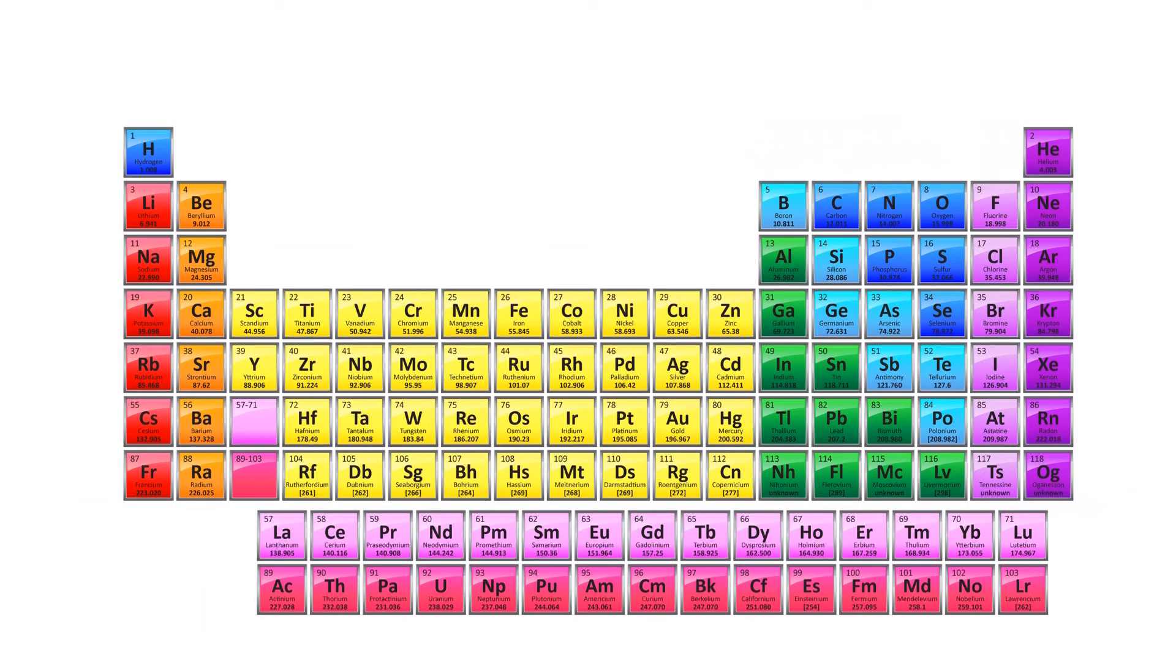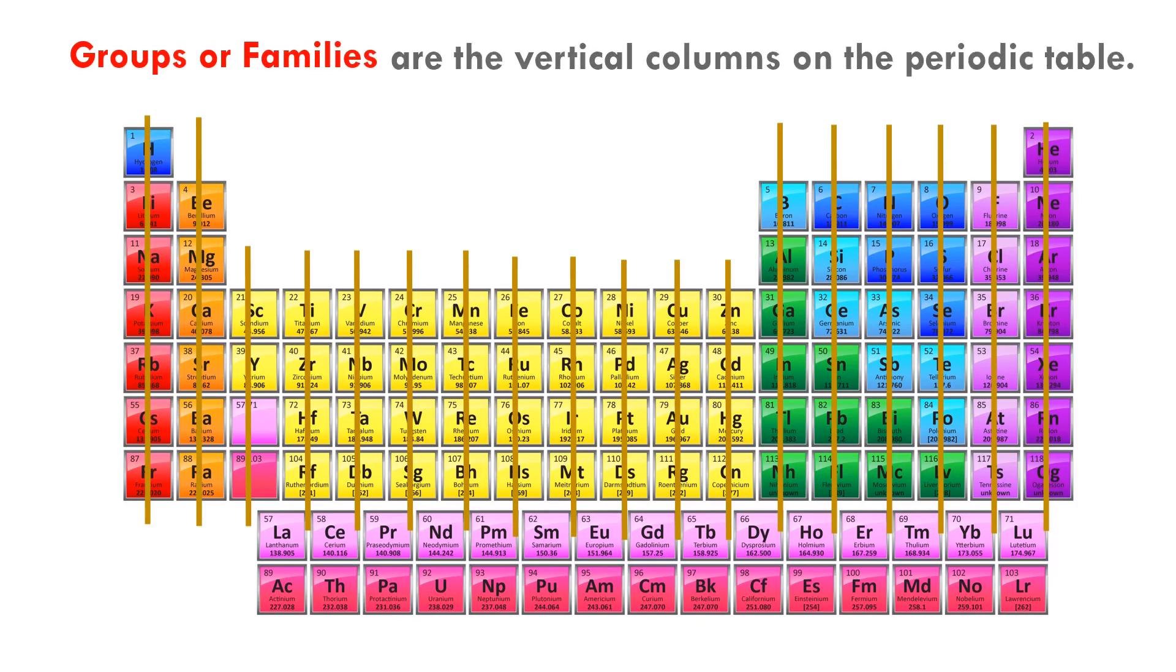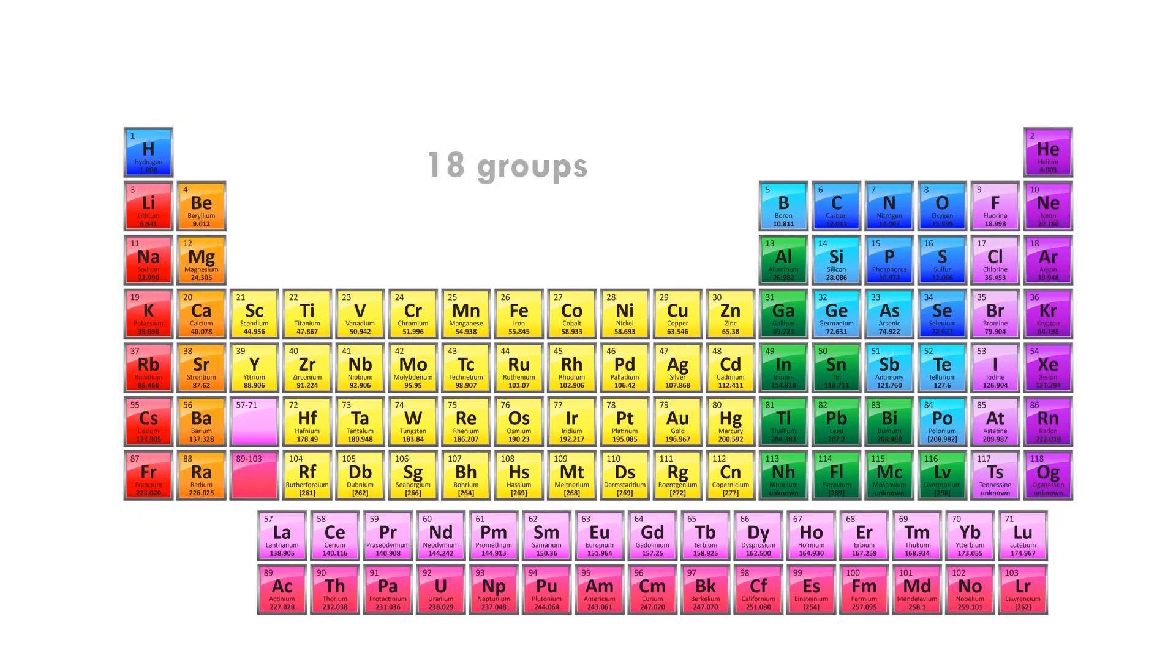Notice that the elements are in columns. Those columns are called groups or families. They are the vertical columns on the periodic table. All members of each family have the same properties. There are 18 groups, which are numbered from left to right.